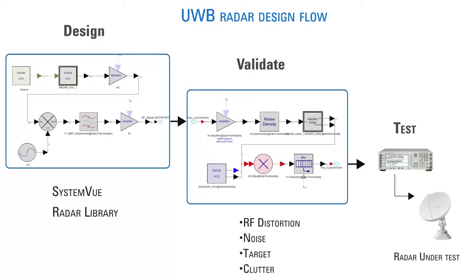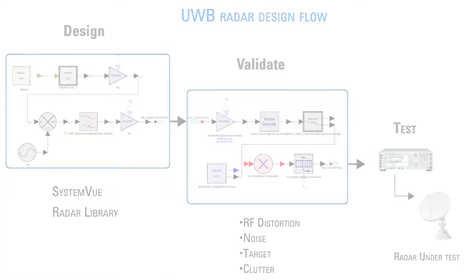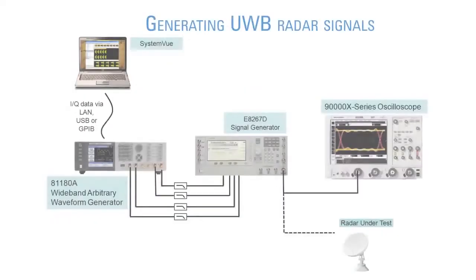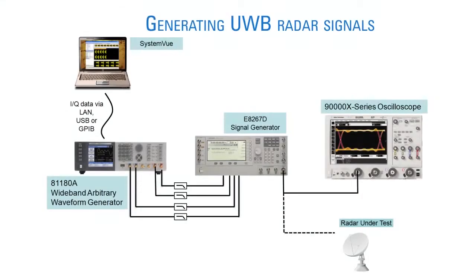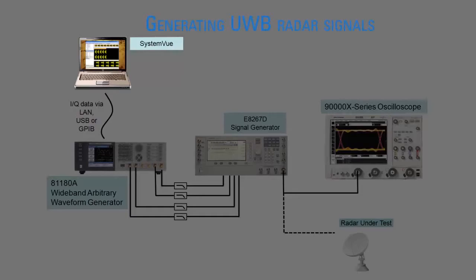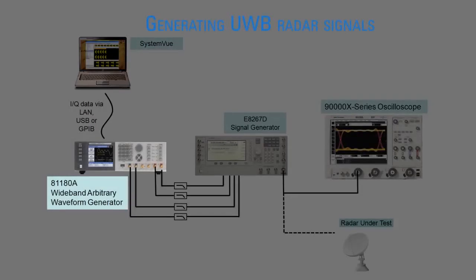We will focus on the last step in the flow: creating waveforms. Shown here is a test setup for generating UWB radar signals. Different UWB waveforms are generated in SystemVue, which are then downloaded to the Agilent 81180A wideband arbitrary waveform generator.